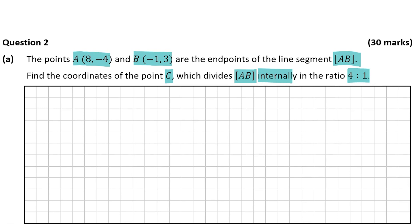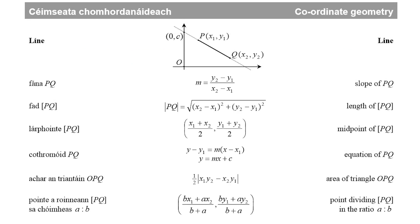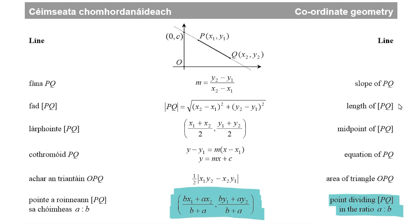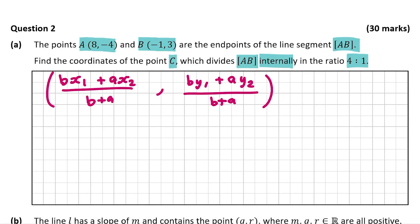This is a question which we need to use a formula for in our log tables. On page 18 of the log tables you'll see the formula for the point dividing PQ in the ratio A:B. I've written out the formula from the log tables and now let's start filling it in.